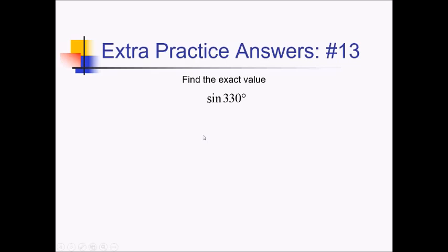On this problem, we're trying to figure out the sine of 330. Let's start by getting a reference angle — this is 30 degrees from 360, the closest x-axis angle. Sine, which is the y values, is going to be negative down in quadrant 4. So this is going to be negative sine of 30 degrees. Sine of 30 is 1/2, so then this will be negative 1/2.